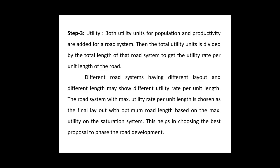The third step is the utility. Both the utility units for the population and the productivity are added for a road system, and then the total utility units is divided by the total length of that road system in order to get the utility rate per unit length of the road. The road system with the maximum utility rate per unit length is chosen as the final layout with optimum road length based on the saturation system.